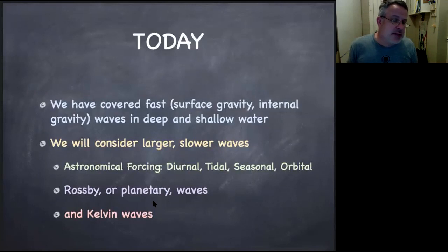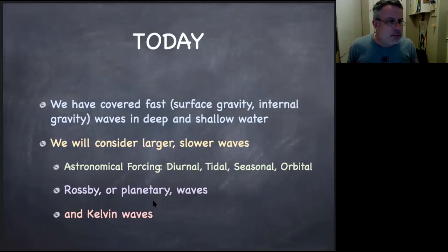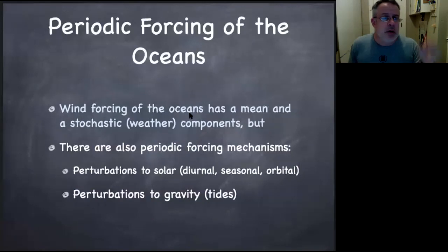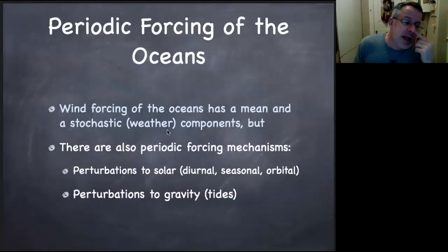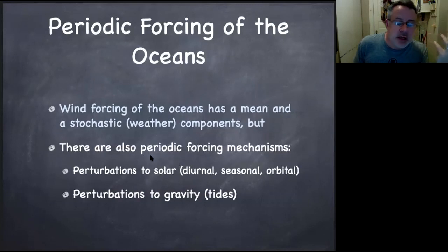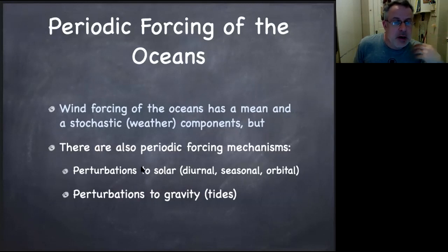These slower waves come from astronomical forcing, so we need to get a handle on how diurnal, tidal, seasonal, and orbital forcing works — what Rossby speed and planetary waves are, what Kelvin waves are. So periodic forcing in the ocean: wind forcing in the ocean has a mean and a stochastic component, but there's also periodic forcing from perturbations to the solar diurnal seasonal orbital cycle, and perturbations to gravity — tides are present.